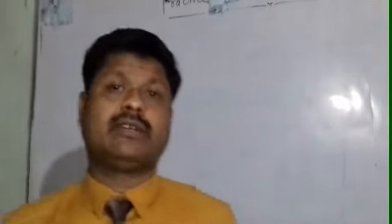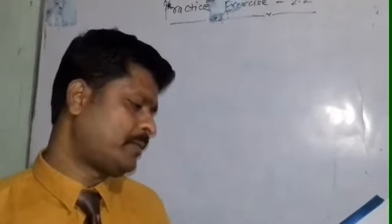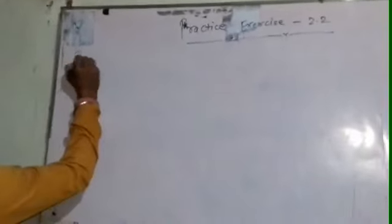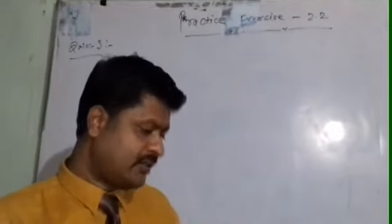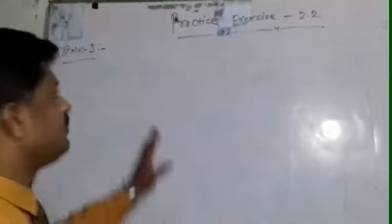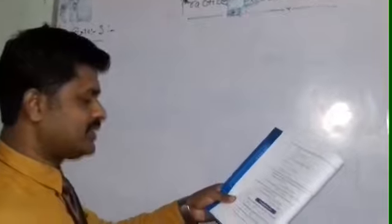Hello students, we are in our fifth lecture. We will solve questions from practice exercise 2.2.1. Questions 1 and 2 were solved in our earlier classes. So let us start question number 3. Take your copies with a pen. I am also starting my lecture and you also start to write all your solving answers. Question number 3: multiply the following and write their products in the lowest term.